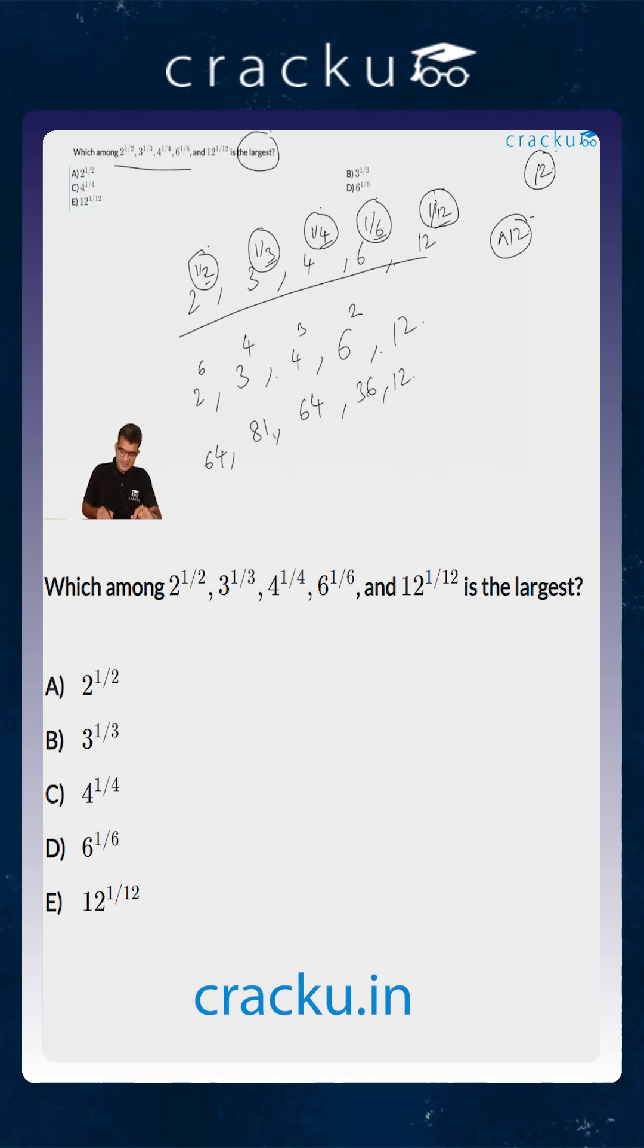The largest is asked and the largest out of all of them is 81. So 3 to the power 1/3 will be the largest of all the given 5 numbers. So the correct answer is 3 to the power 1/3.